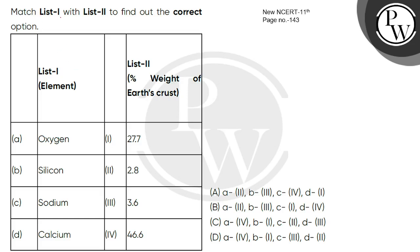Hello kids, let's see this question. Match list 1 with list 2 to find out the correct option. In list 1 there are elements and in list 2 there is percentage weight of earth's crust.